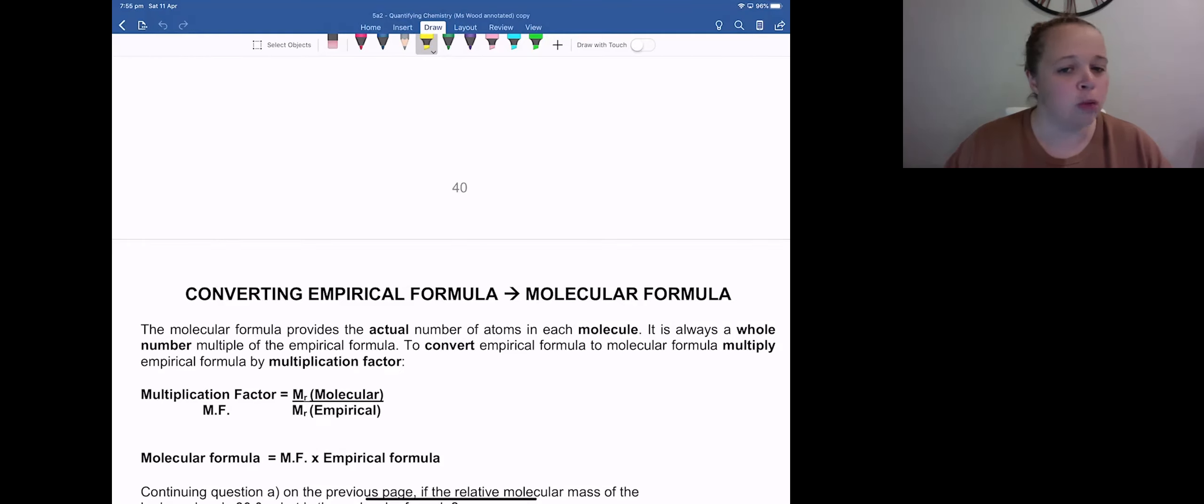So you can't have C2.5H5. That doesn't work. To convert empirical formula to molecular formula, you always multiply your empirical formula by a multiplication factor. So how do you find out what the multiplication factor is? You're either going to be given it in a question or you'll be able to figure it out using one of these two equations.